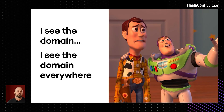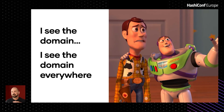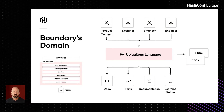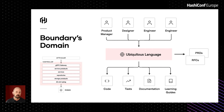You'll also notice protobufs not only at the service layer but at the data storage layer as well. Once you start down domain-driven design in Boundary, the domain becomes part of your language — the ubiquitous language of the domain. Ubiquitous language is where you strive to have clear concepts and terms without ambiguity across a limited domain. You use those terms and concepts whether talking to engineers, designers, or product managers, writing an RFC, PRD, code, or tests. We're always searching for new patterns and terms within the Boundary domain as we develop it.